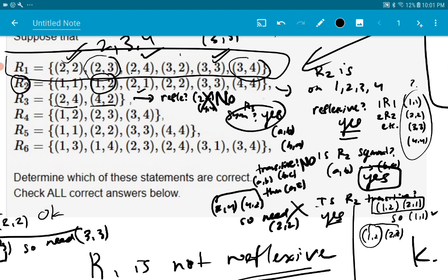So R3 is not reflexive. It is symmetric, and it's not transitive. So if you're looking at your questions on your problem, question B says, is R3 reflexive? So you would not check that box. There's another question, D, that says, is R3 symmetric? You would check that one, okay?